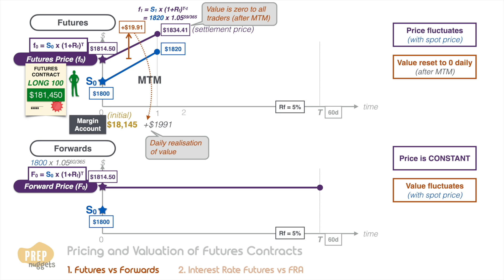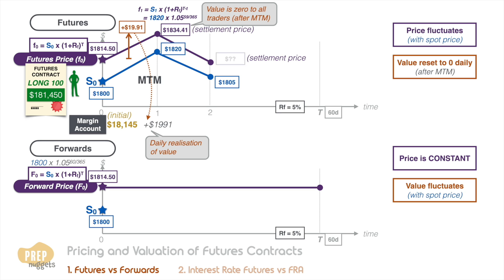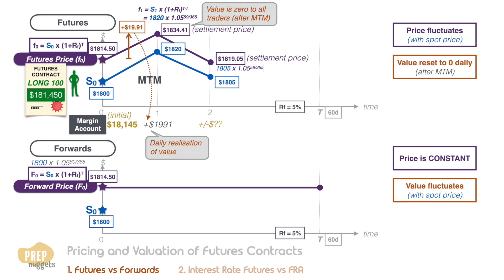Now it's your turn to practice. Let's say the spot price of gold falls to $1,805 at the end of the next trading day. What is the no-arbitrage price of the contract based on the spot price and 5% risk-free rate? And if that is the settlement price, what is the mark-to-market amount on the trader's account? The no-arbitrage futures price should be this amount — bearing in mind there are 58 days to expiry. If this is the settlement price, the daily loss is $15.36, and $1,536 should be deducted from the margin account.